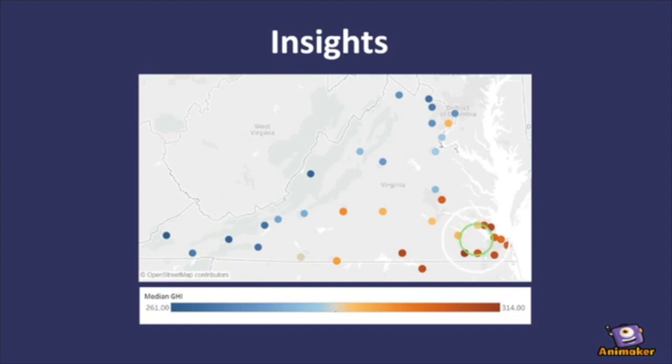In contrast, areas closer to the coast such as Norfolk and Virginia Beach with flatter land tend to receive more sunlight.